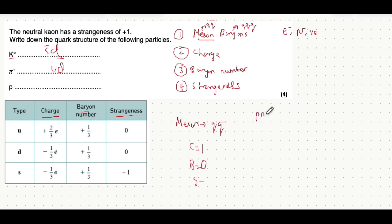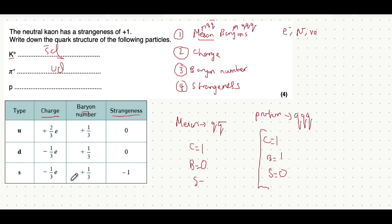Moving on to a proton. Question one: is this a baryon or a meson? It's a baryon, meaning it has three quarks. The charge of a proton is one; the baryon number is one; and strangeness is zero. What combination of three quarks satisfies these? Two up quarks give a charge of 4/3, and one down quark contributes -1/3, giving a total of 3/3 e, which is a charge of +1. The baryon number is 1/3 + 1/3 + 1/3 = 1, and strangeness is zero. So a proton has up-up-down as its quark composition. As a bonus, an anti-proton would have anti-up, anti-up, anti-down.